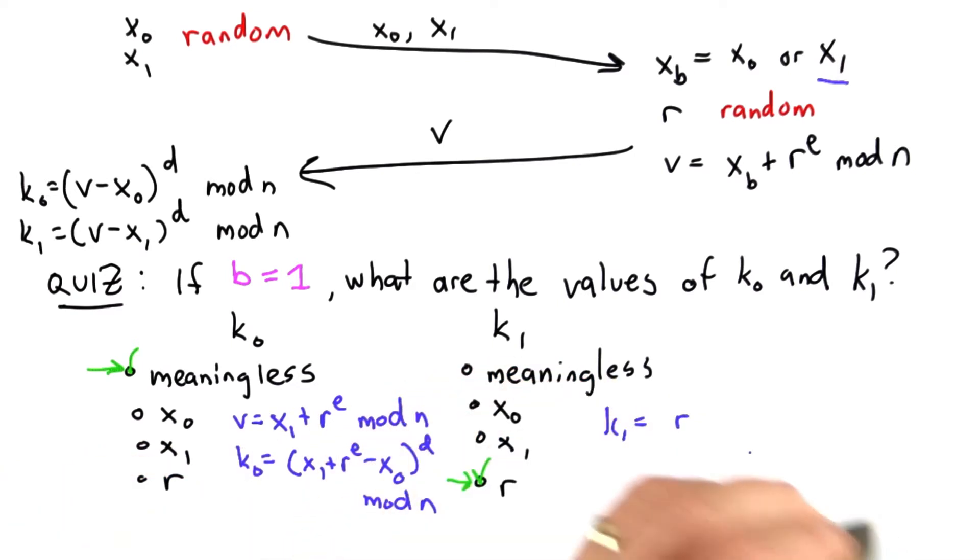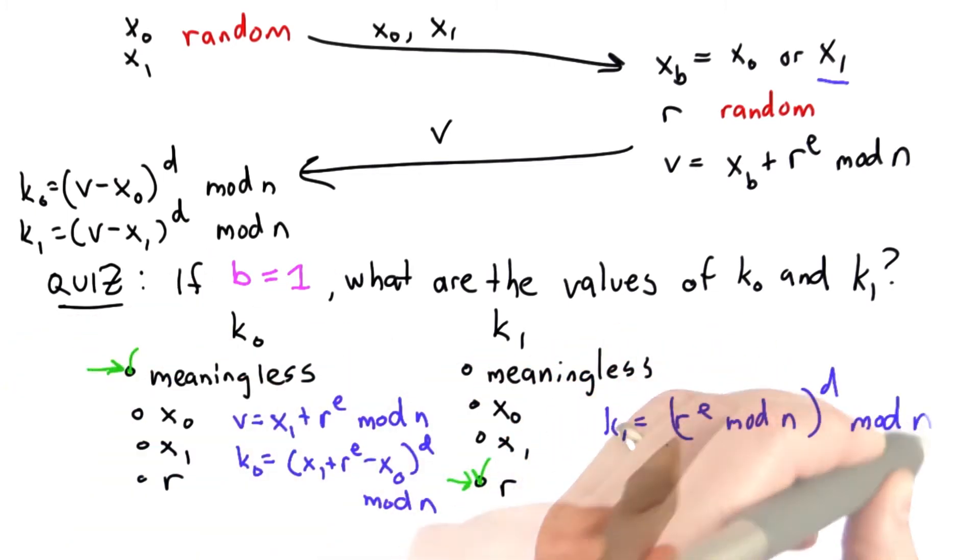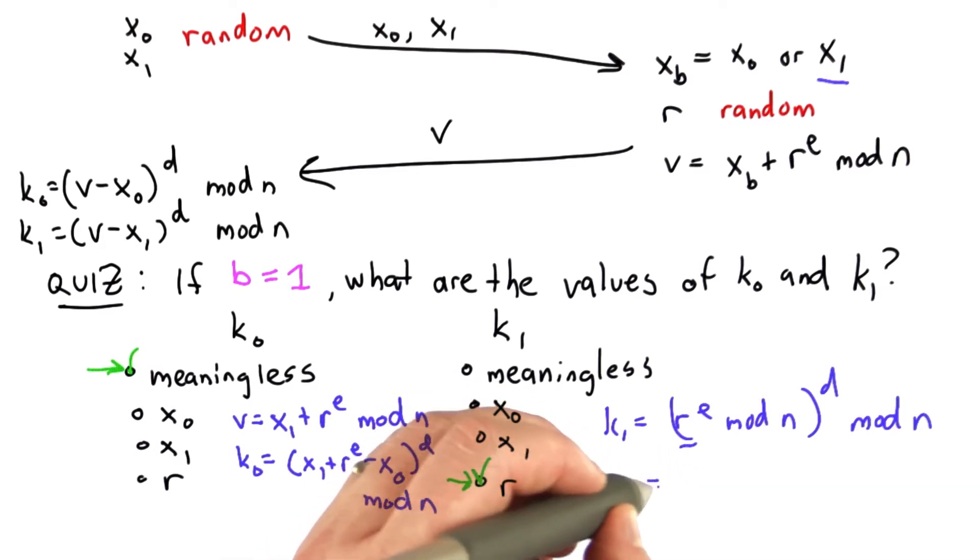So the value of k is r to the e mod n raised to the d power mod n. This is exactly the RSA decryption that will give us the value of the message, which in this case equals r.